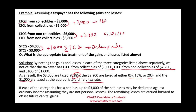If each of the categories has a net loss, up to $3,000 of that net loss may be deducted against ordinary income. What we are assuming here is you have losses from stocks and bonds, not from personal-use assets. If you have losses, you can use $3,000 against ordinary income. The remaining losses are carried forward to offset future capital gains.